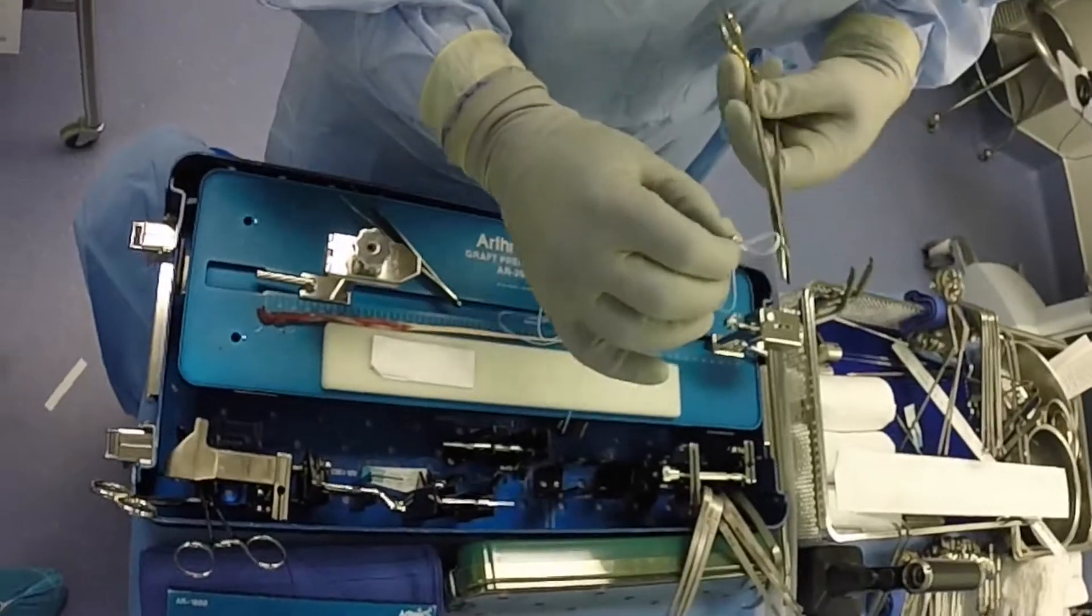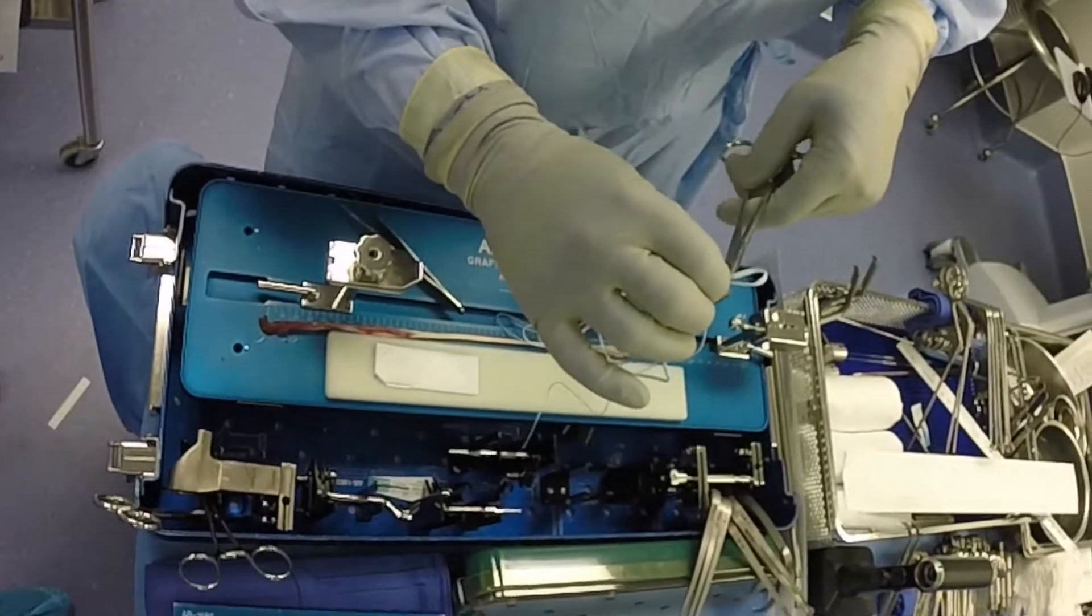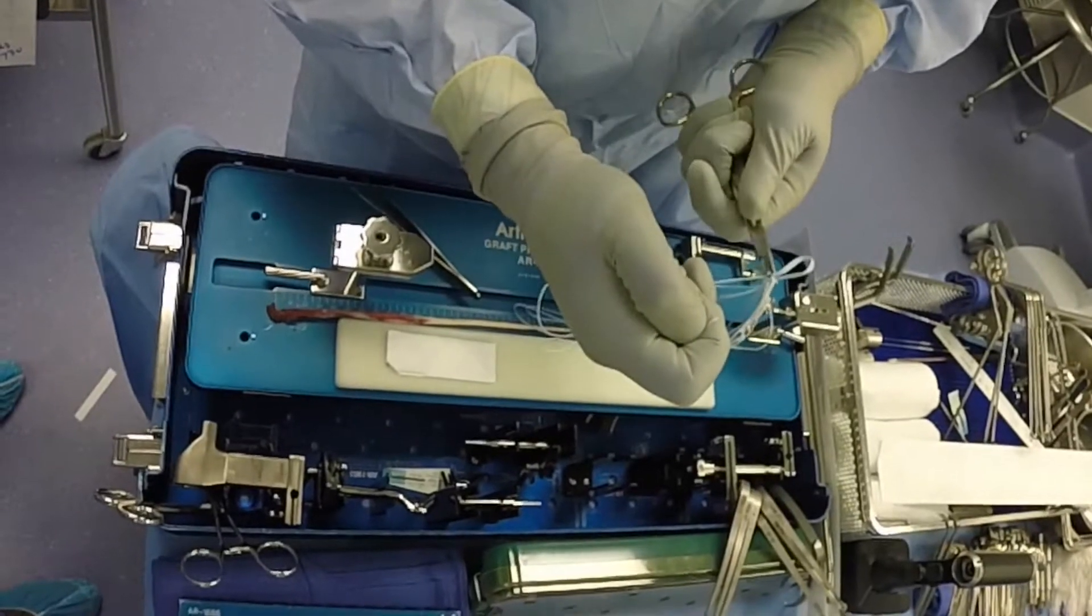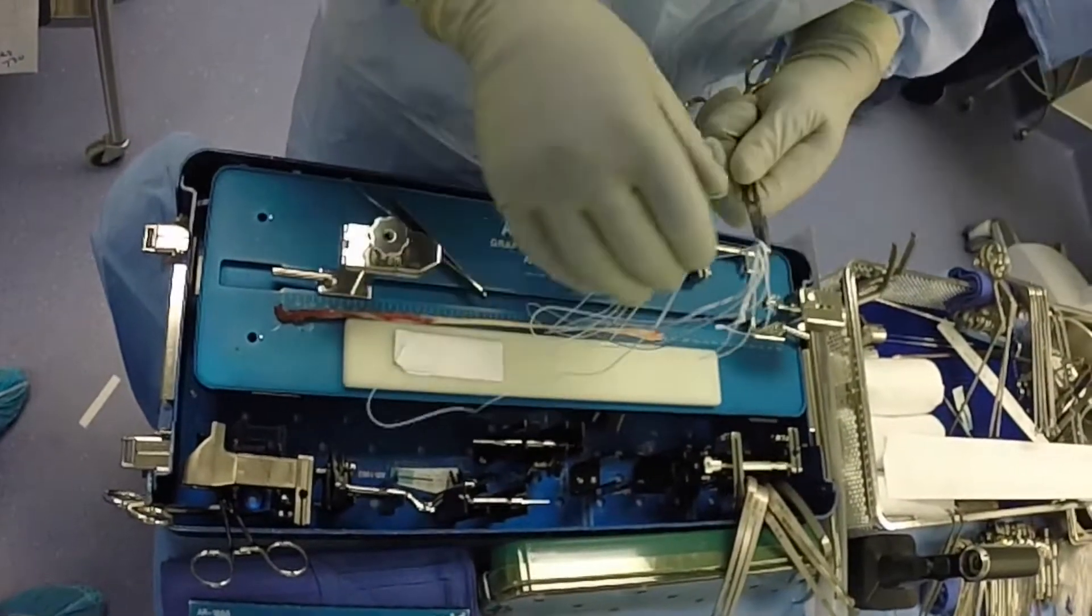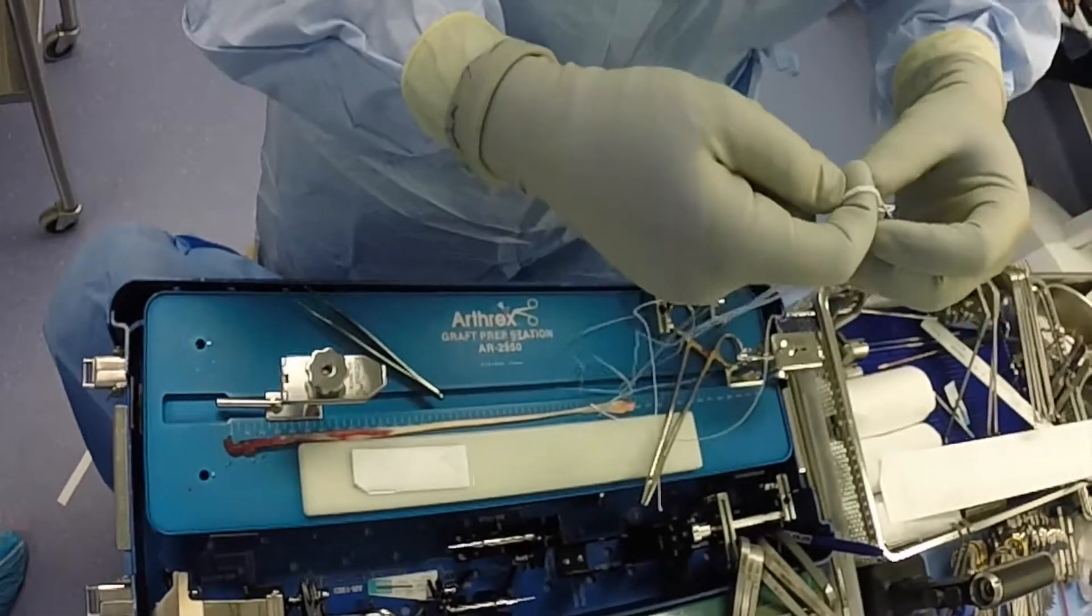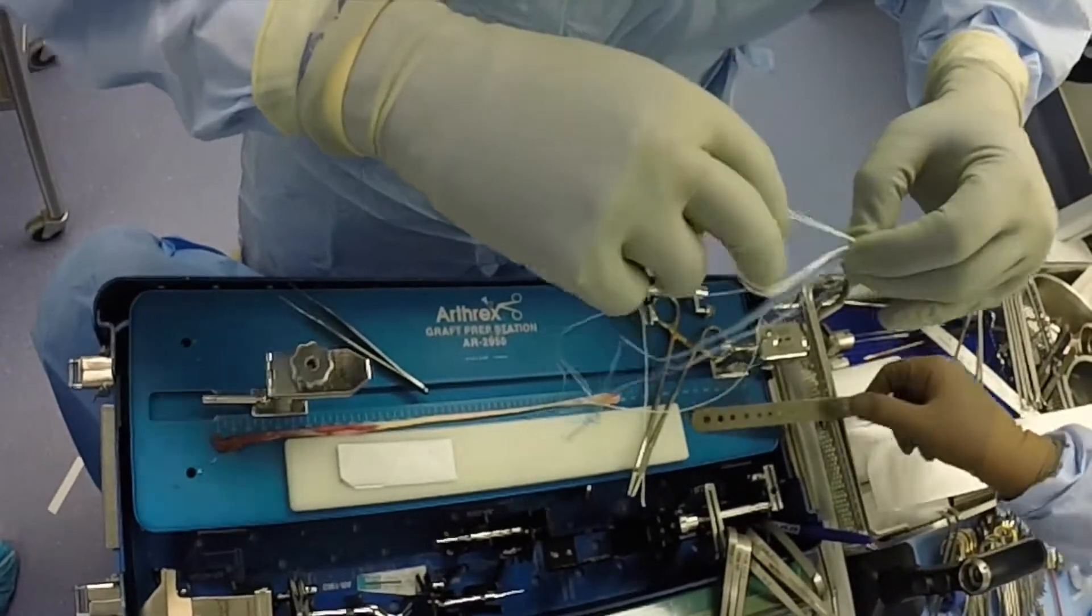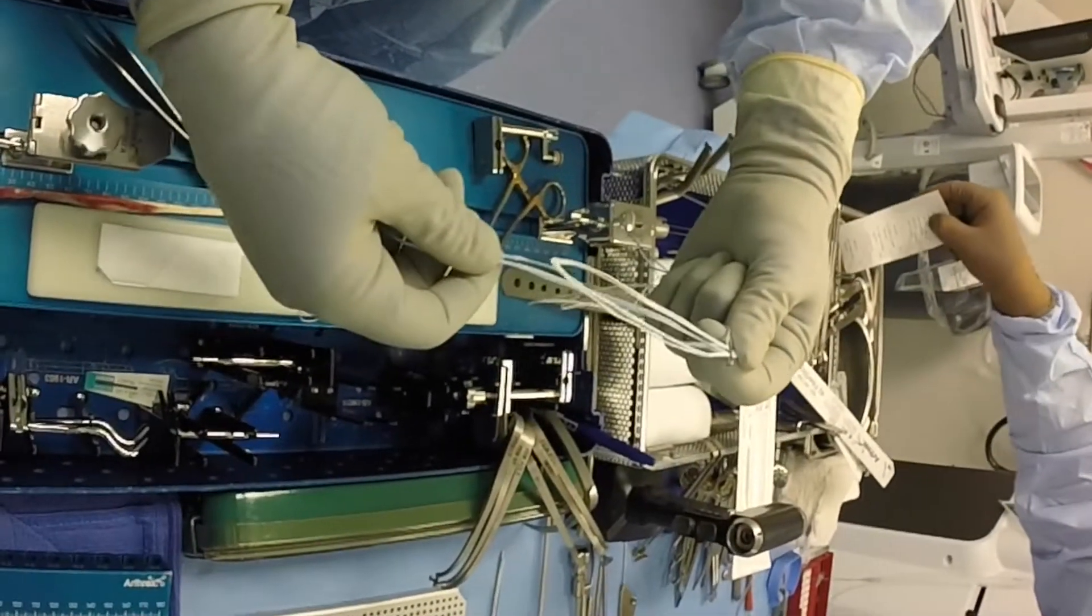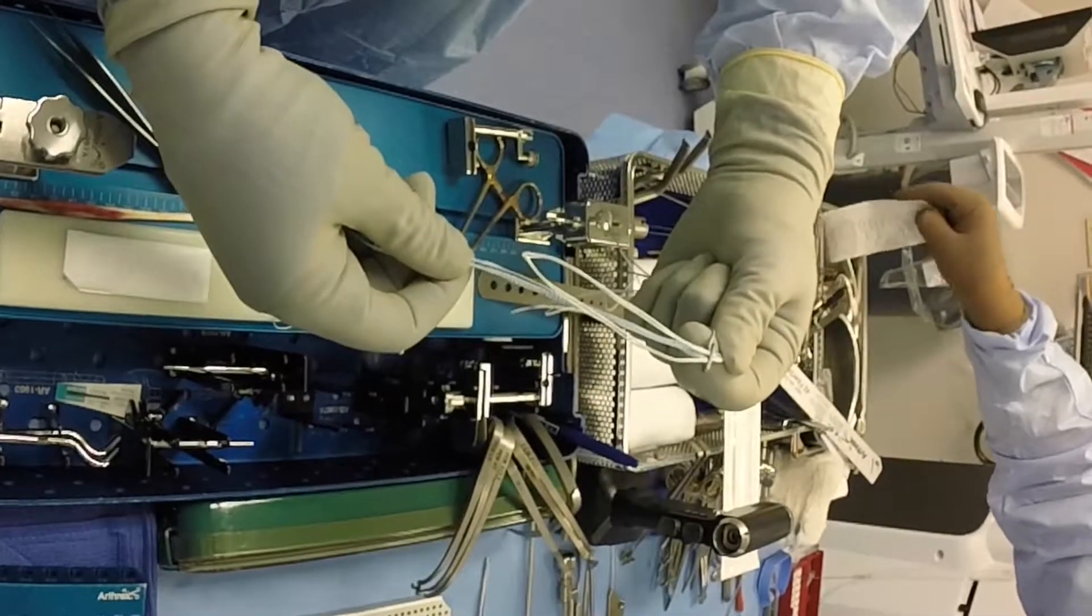Care is taken to fully seat the FiberTape suture against the button in such a manner that the all-inside device functions properly. Here you see the loop for fixation of the graft is pulled down against the button, and that's how it should look prior to loading the graft.